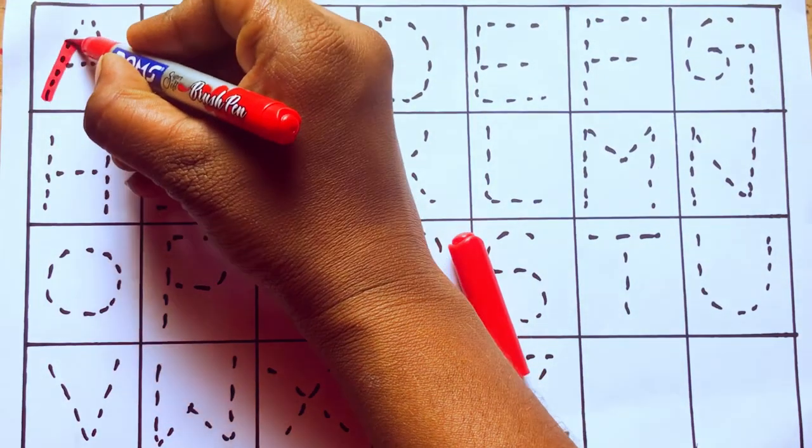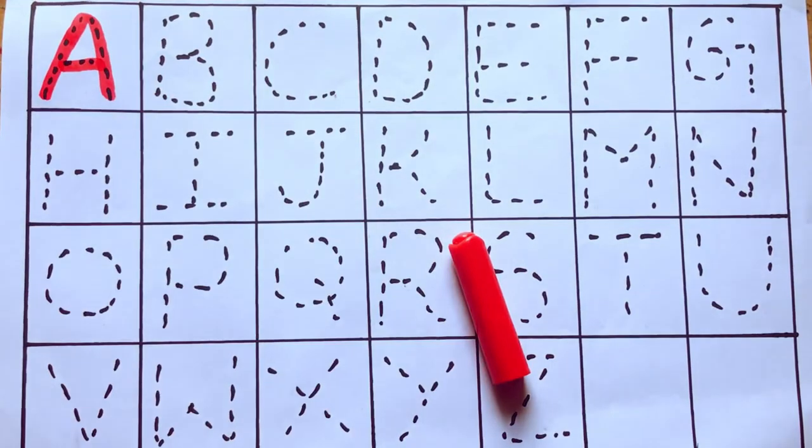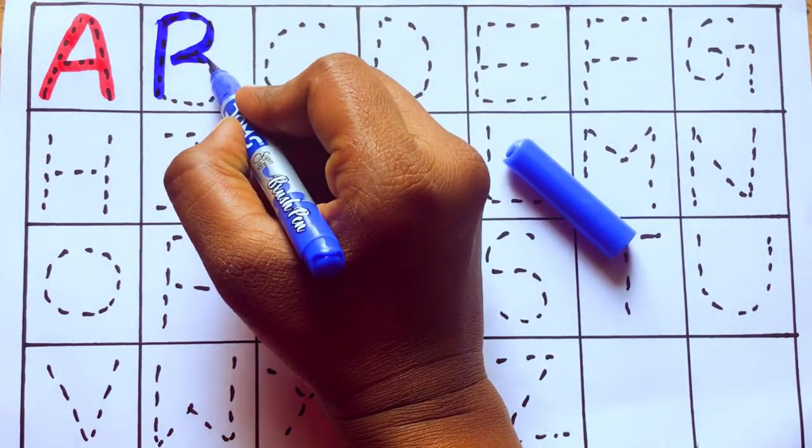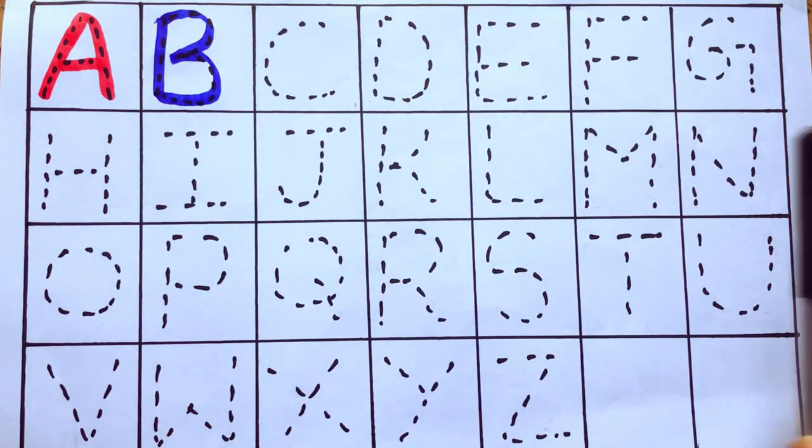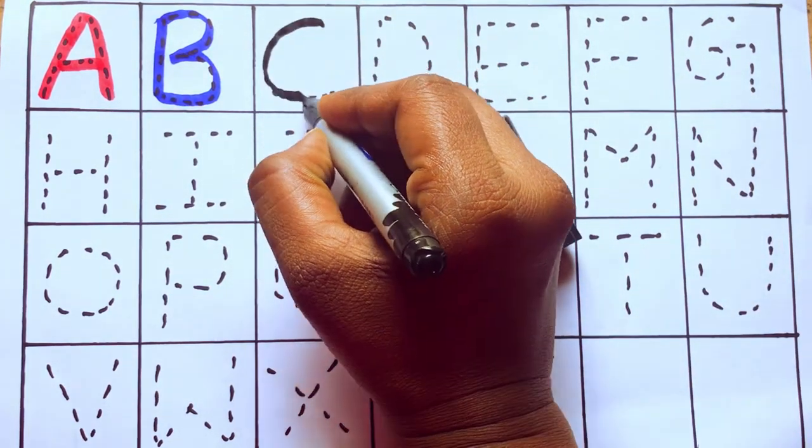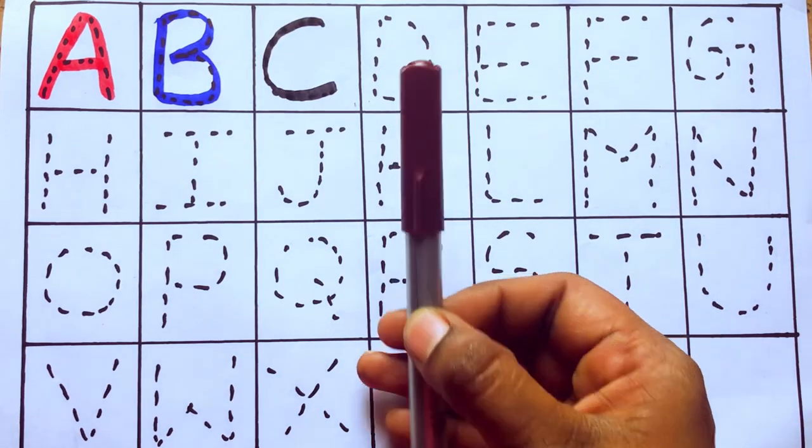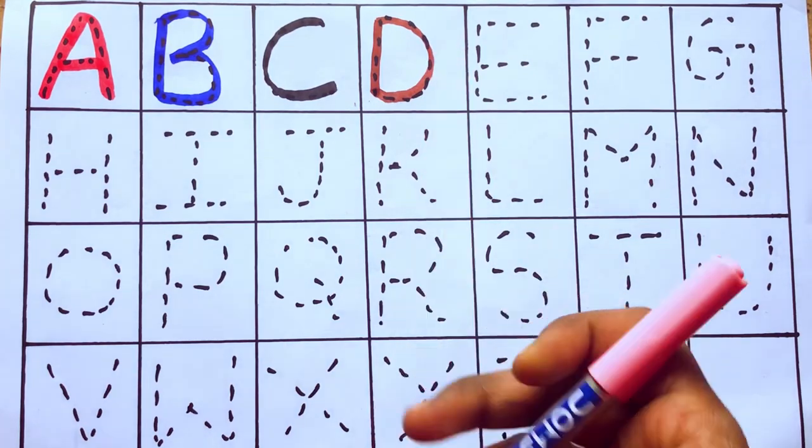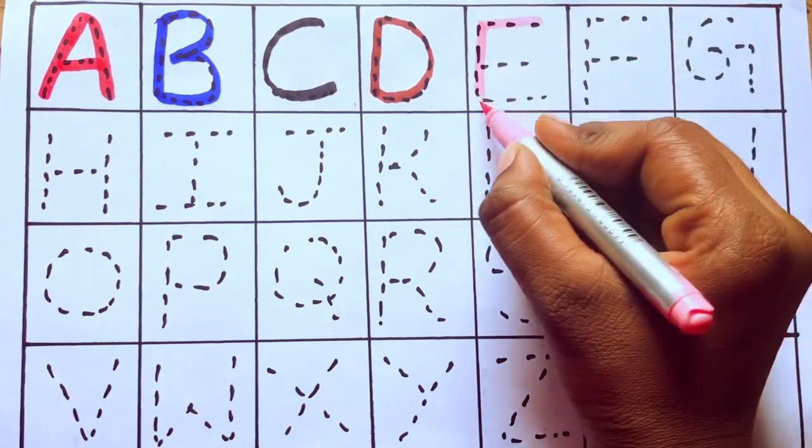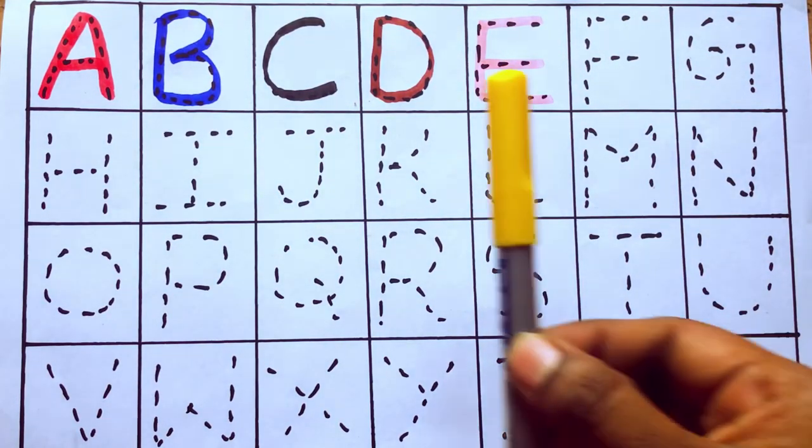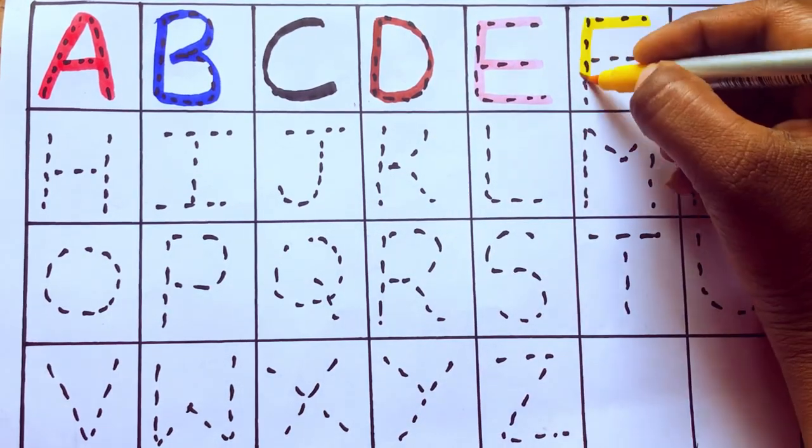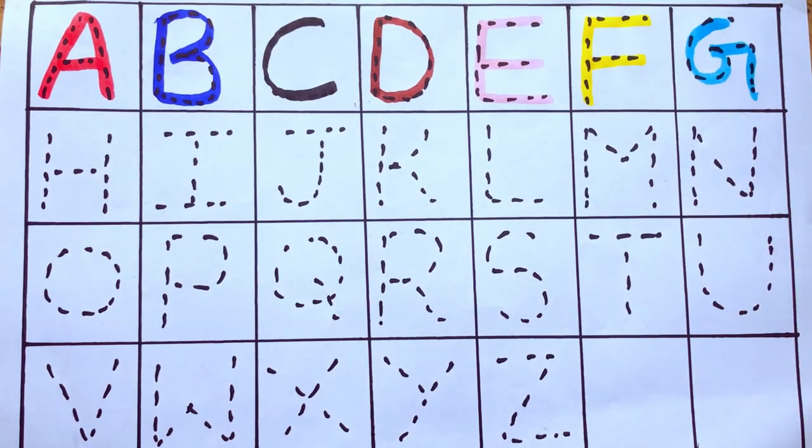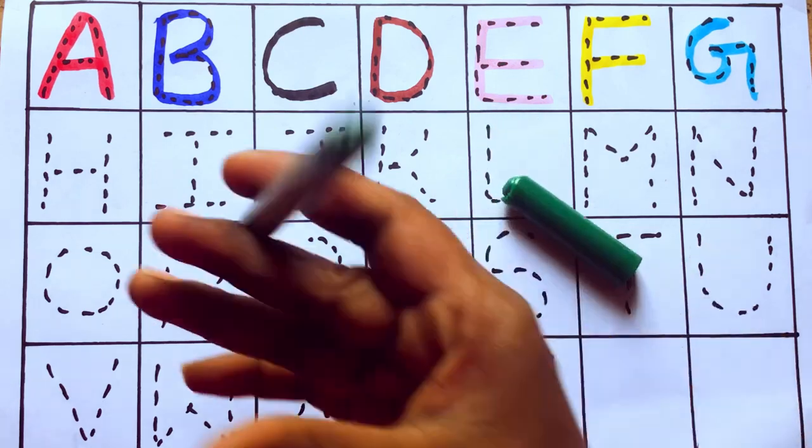A for apple, blue color. B for ball, black color. C for cat, brown color. D for dog. Light pink color. E for egg.